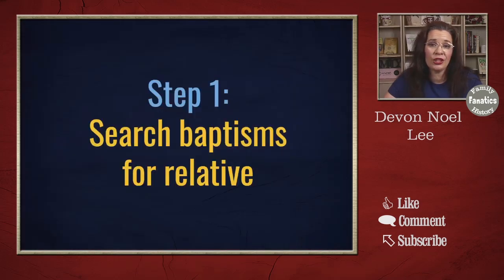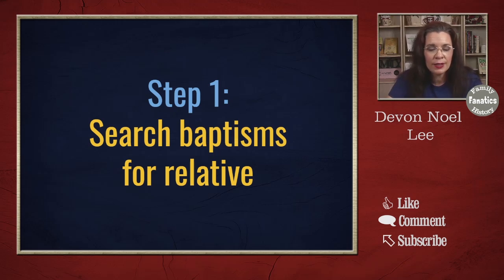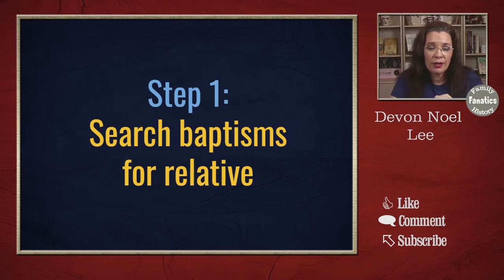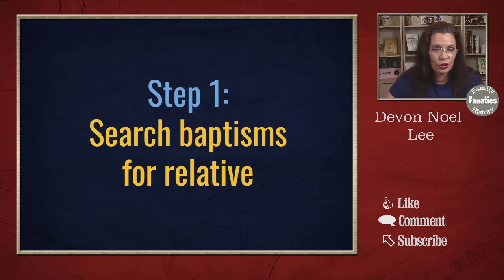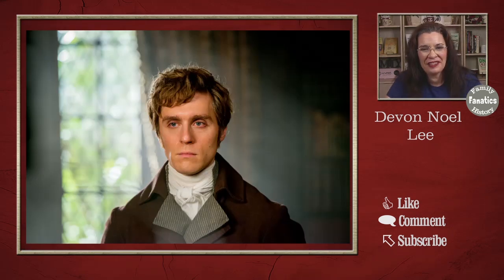The first step I was taught is that you should search for baptisms first. Baptisms have the most identifying pieces of information in order to build your family tree. Next would be marriage records, and then finally burial records — and you're going to see why in a second. Start with the baptism records for the relative that you're searching for. I'm going to borrow an English relative simply because I don't have any close English relatives to search in parish records.